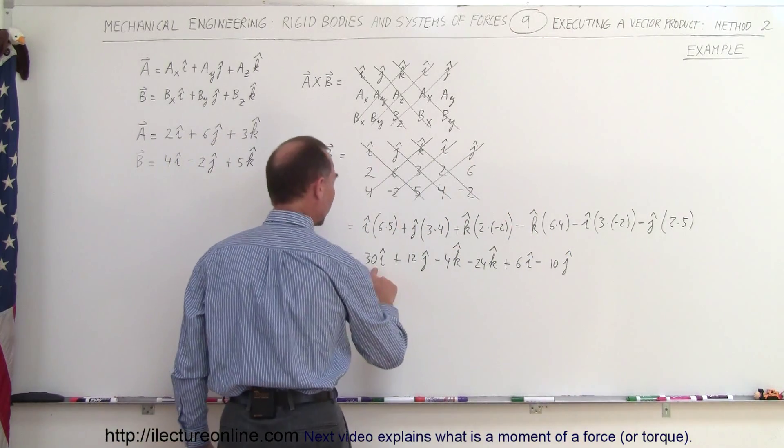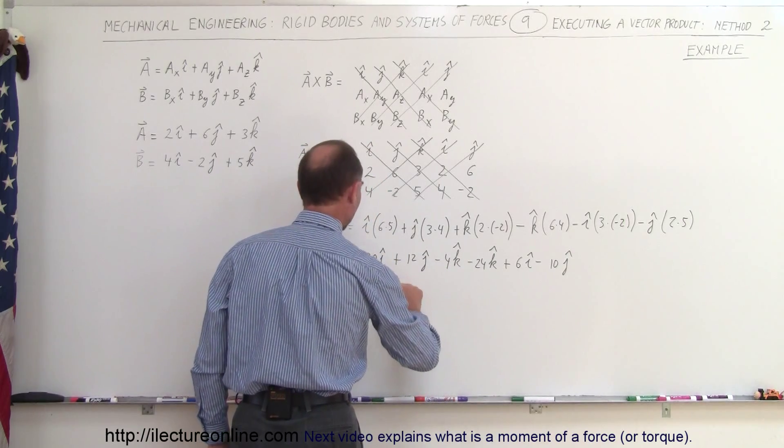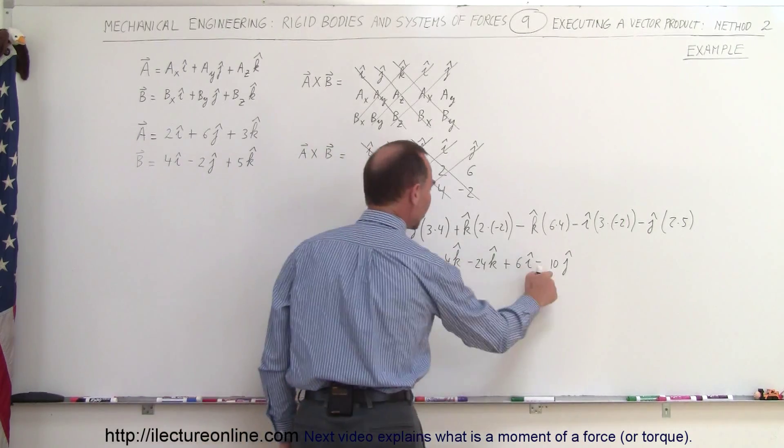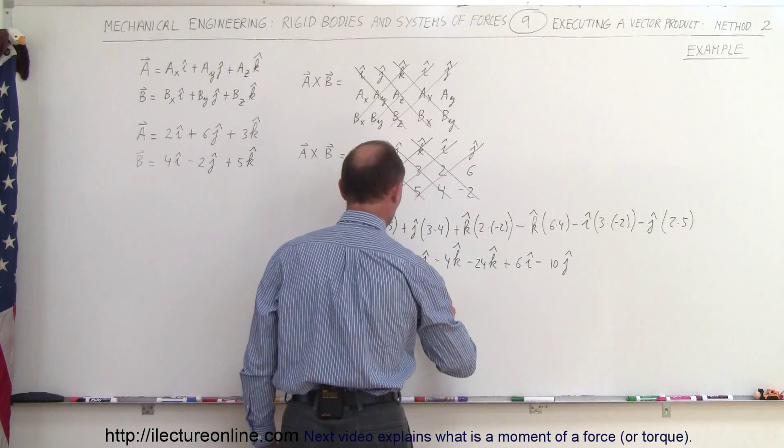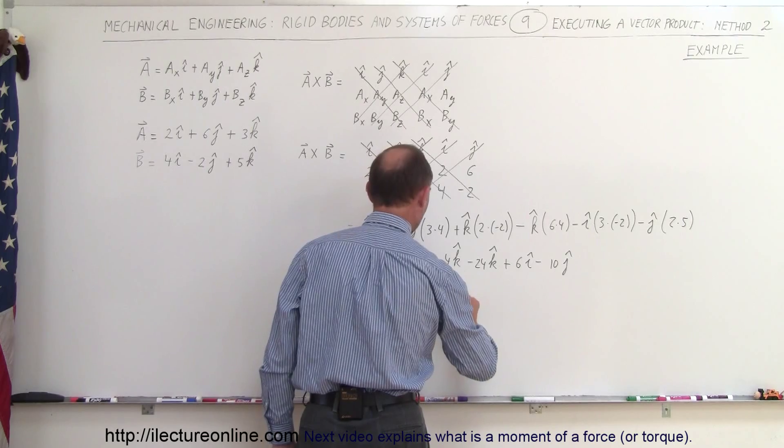And so this is equal to 30I plus 6I, that is 36I, we have 12J minus 10J, that would be plus 2J, and minus 4K minus 24K is minus 28K.